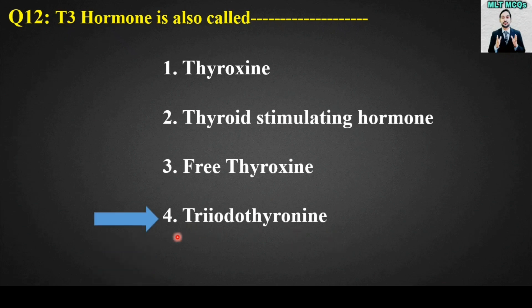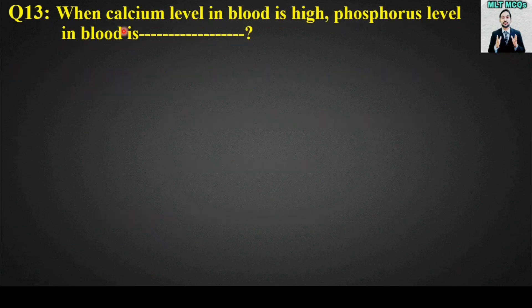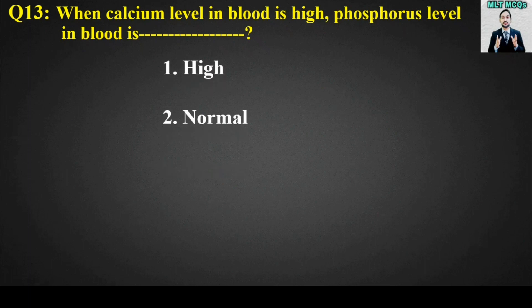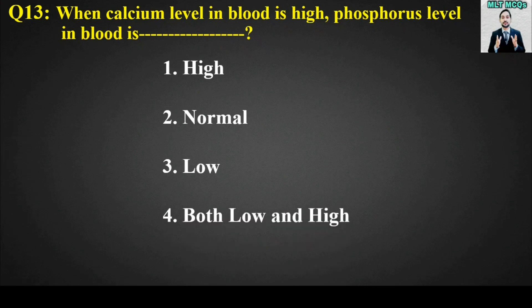MCQ number 13: When calcium level in blood is high, phosphorus level in blood is blank. This MCQ is also very important. Options are: high, normal, low, or both low and high. The right answer is option number 3, low. When calcium level in blood is high, phosphorus level in blood is low.